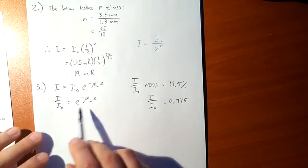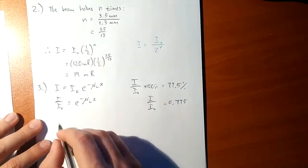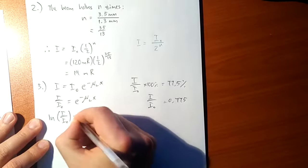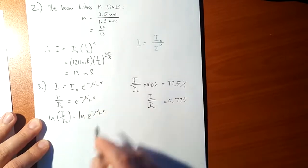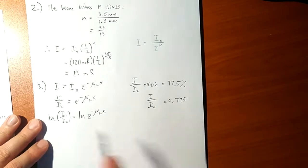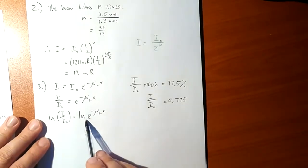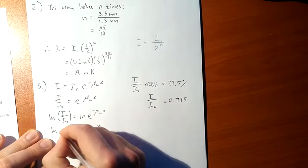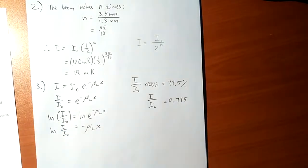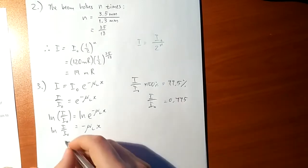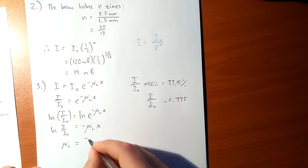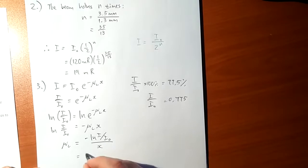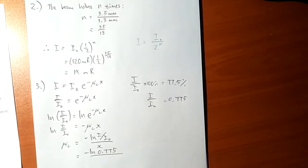Now I'm after this, the linear attenuation coefficient. How am I going to get it? By just taking the logarithm on both sides, I'm going to use the natural logarithm ln. So if I do that on both sides, ln of e to the minus μₗ x. Ln is just log base e. So here is written to what power e has to be raised to get e to the minus μₗ x, which is just trivially minus μₗ x. Ln of I over I₀. Okay, so what I'm after is μₗ, and that is, in other words, equal to minus ln of I over I₀ over x. In other words, minus ln of 0.775 over whatever x is.